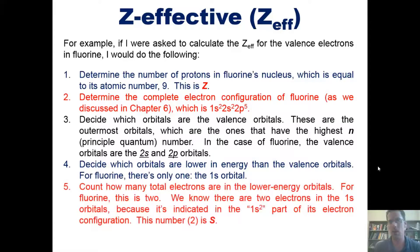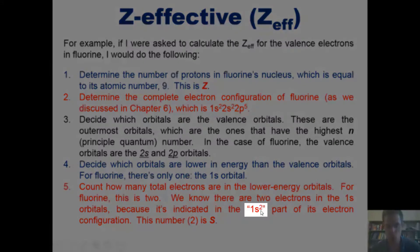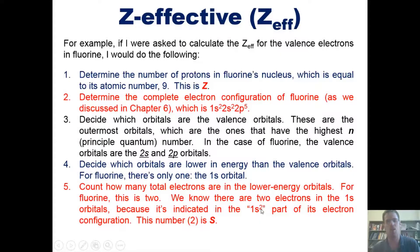Five, we now count how many total electrons there are in the lower energy orbitals. For fluorine, that happens to be two. We know that there are two electrons in the 1s orbital because it's indicated in the 1s2 part of its electron configuration. So this little 2 right here indicates that in the 1s orbital, that smallest spherical shaped orbital that's closest to the nucleus of fluorine, there are two electrons occupying it. That 2 is the number S from the equation that I showed you.